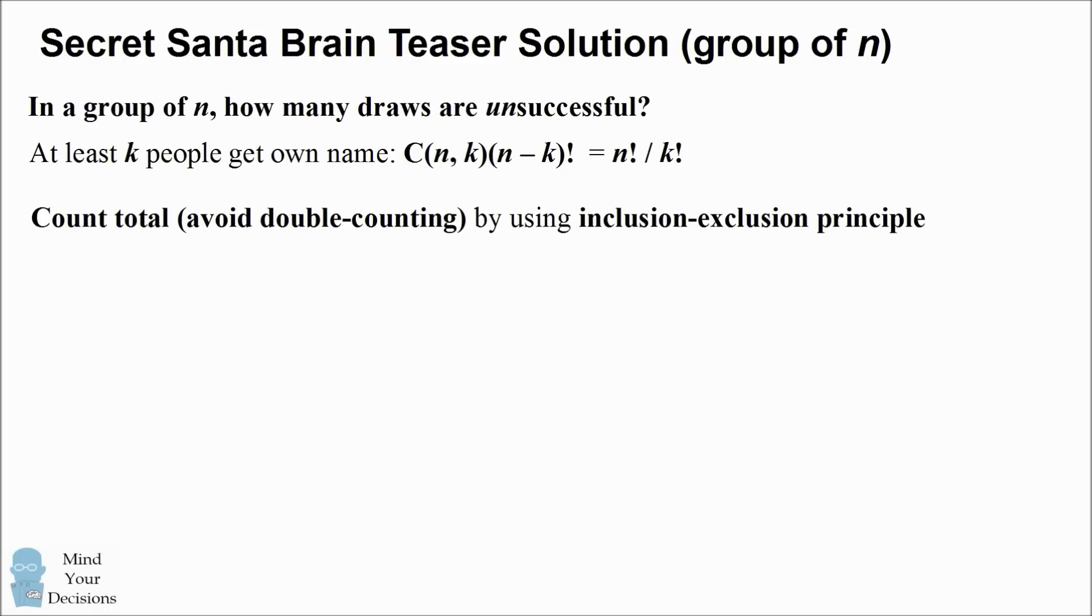We're going to avoid double counting by using the inclusion-exclusion principle. We add up the numbers where the number of sets which have an odd number of people, and we subtract out the sets which have an even number of people. So this is the formula: we add up the ones where at least one person is getting their own name, we subtract out at least two people, then we add back in having at least three people, and so on. We subtract out the number of sets which have at least an even number, and we add in the numbers which have an odd number.